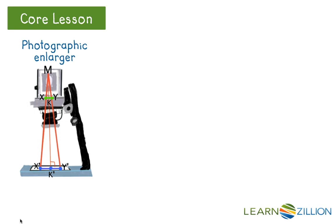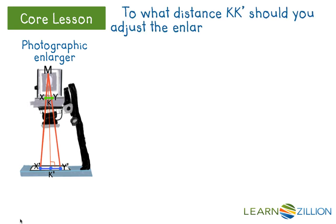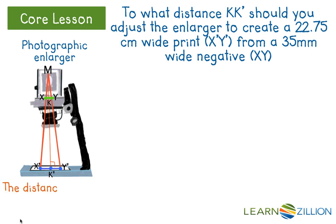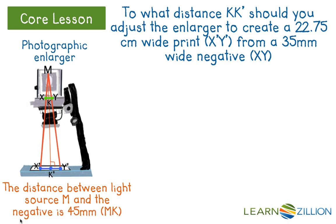Here we have a photographic enlarger. The question is: to what distance, K to K prime, should you adjust the enlarger to create a 22.75 centimeter wide print, X prime Y prime, from a 35 millimeter wide negative, X Y? The distance between the light source M and the negative is 45 millimeters — that length is M, K. You should notice that this is a dilation with a center point at M, the pre-image X Y, and the image at X prime, Y prime.